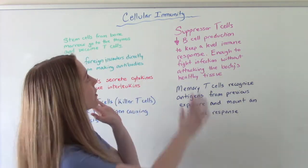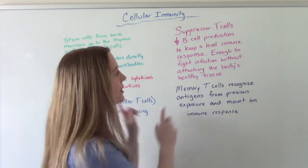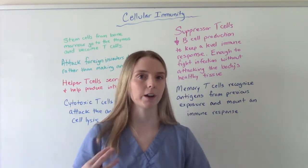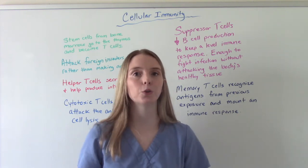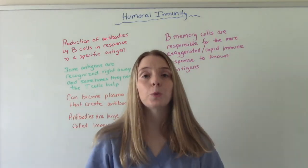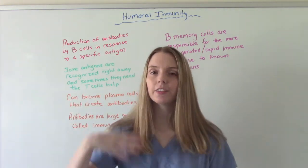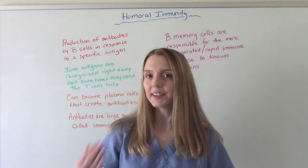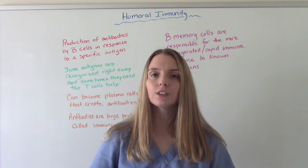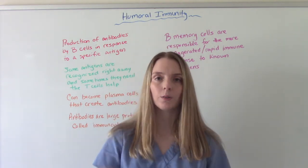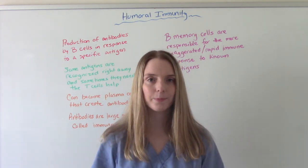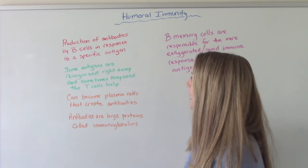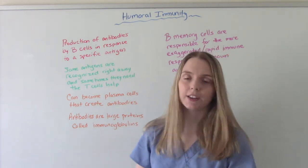So when you think cellular immunity, think T-cells and all the different types of T-cells and how they work — they work directly on those foreign pathogens. Now let's talk about humoral immunity. When you think cellular, think T-cells; when you think humoral, think B-cells. T-cells are from the thymus; B-cells are from the bone marrow. With humoral immunity, there is the production of antibodies by the B-cells in response to a specific antigen.